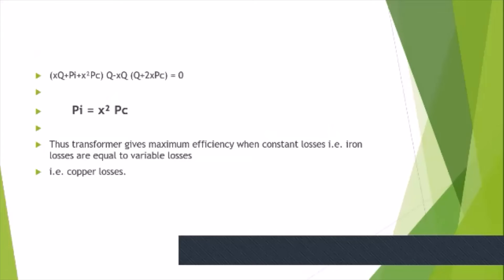Thus the transformer gives maximum efficiency when constant losses, that is iron losses, are equal to the variable losses, that is copper losses. Thank you.